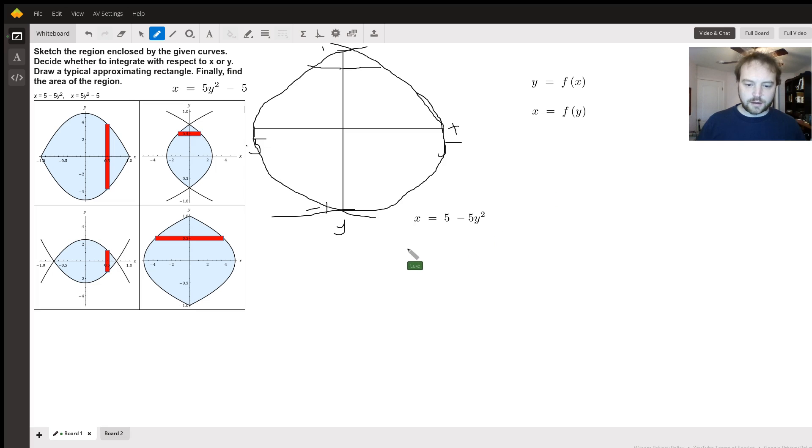So that's going to be 5 minus 5y squared minus 0 is going to be that distance. And then 0 minus 5y squared minus 5 is going to be that distance. And it's going to end up just doubling these two things, right? Because this is going to turn into a negative, this is going to turn into a positive, you're going to add these two together, and you're going to get a double.